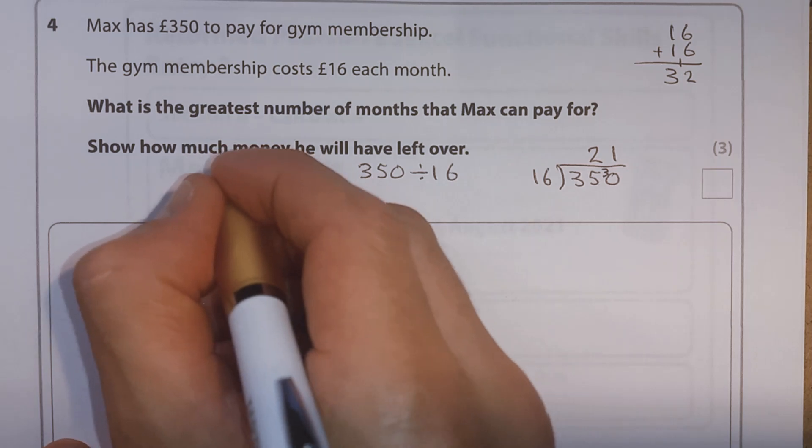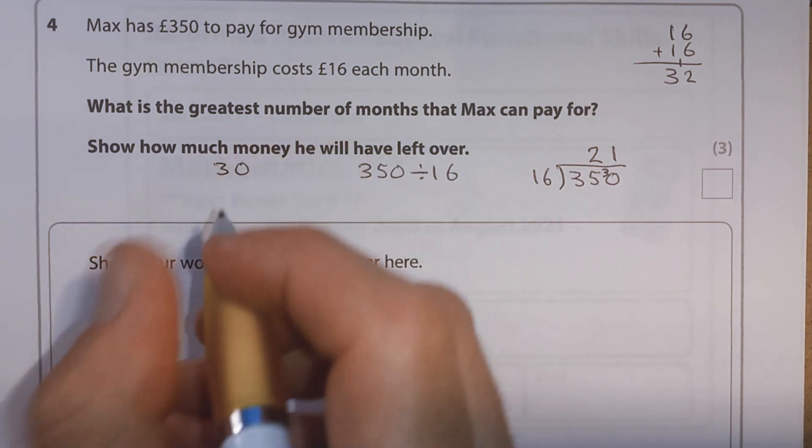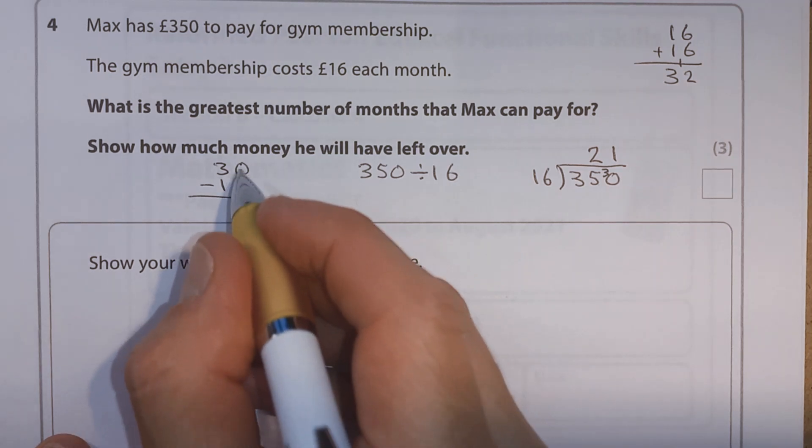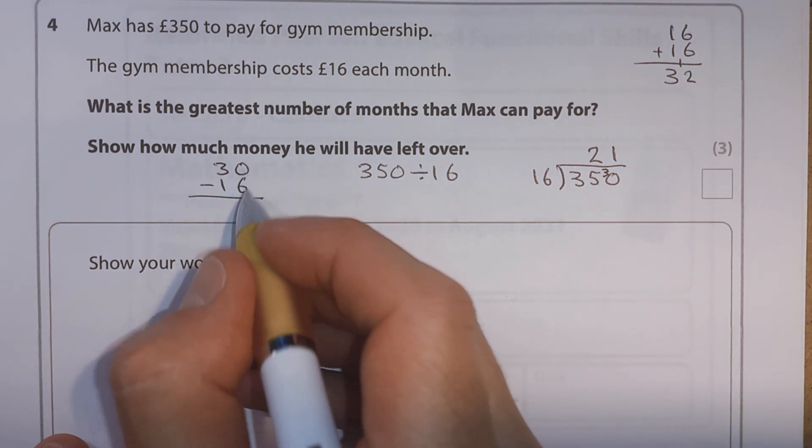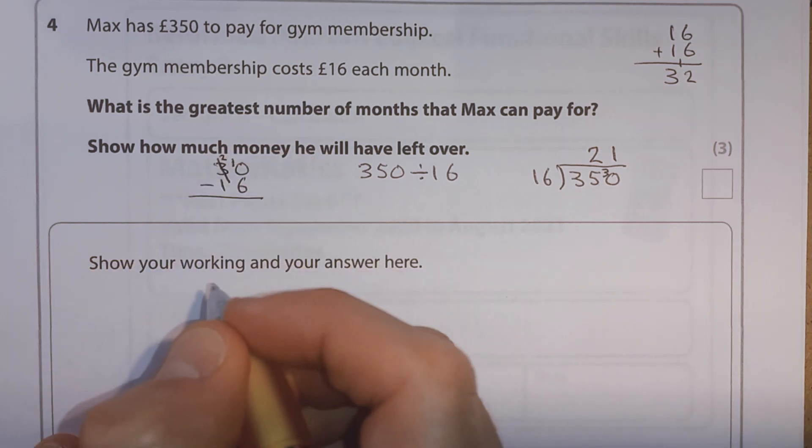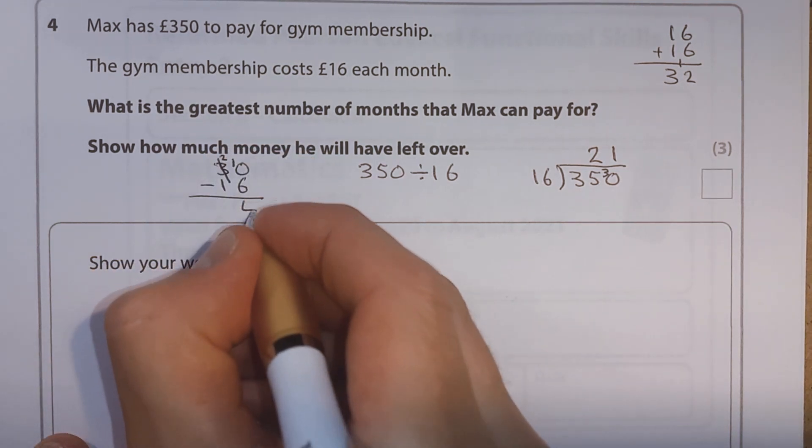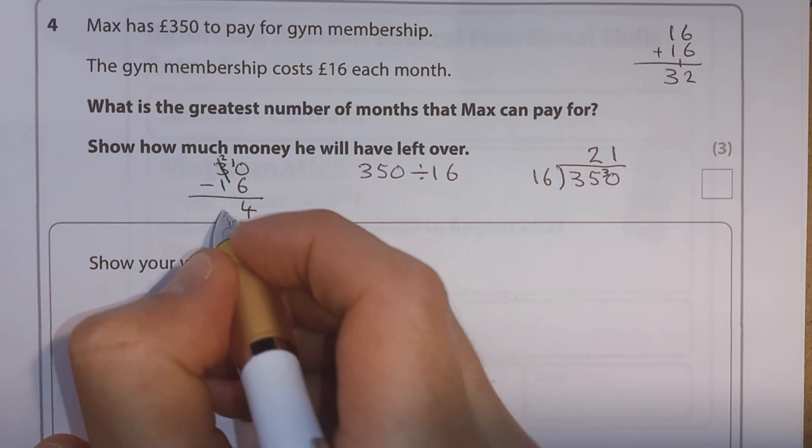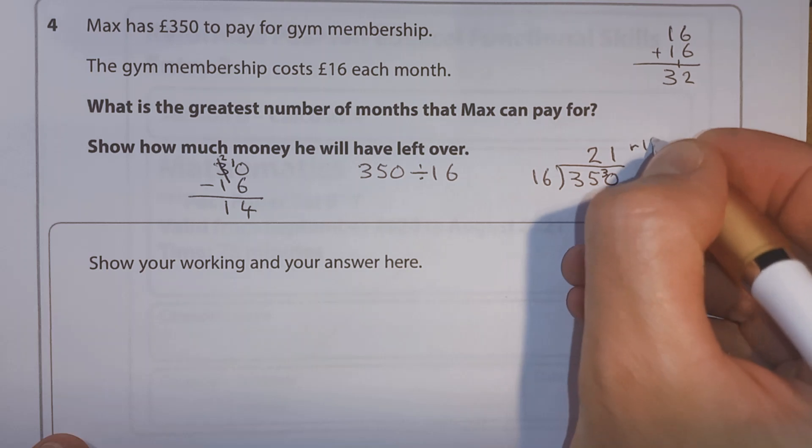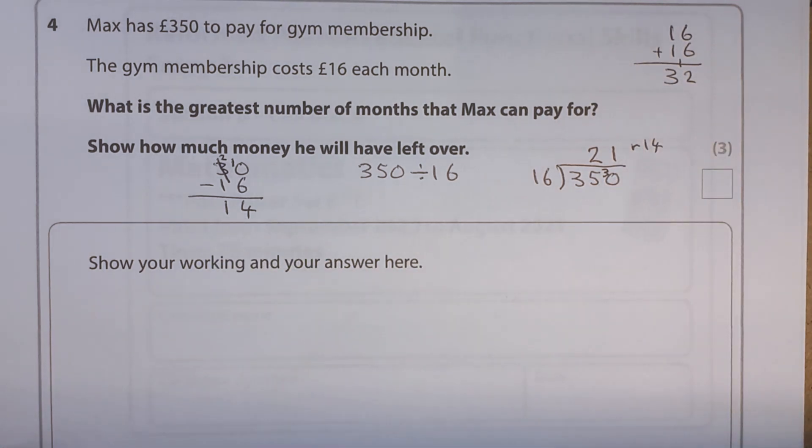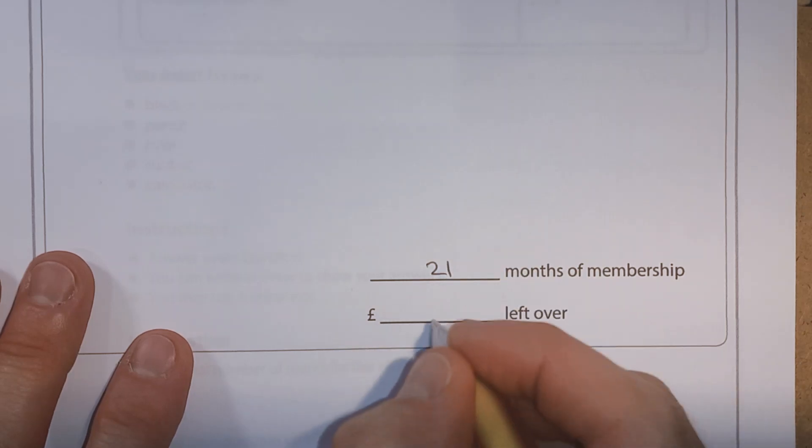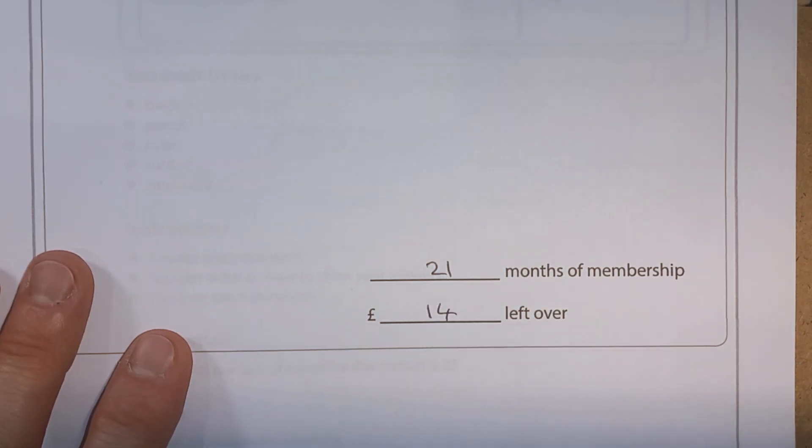And how much left over? Well, what we can do, we can do it over here. We can say, well, 30, let's take off one lot of 16. Well, zero minus 6, we can't do because 6 is bigger than zero. So we'll reduce this to a 2 and pass one over. So 10 minus 6, we get 4. 2 minus 1, we've got 1. So we've got a total of 21 remainder 14. So that means 21 months of membership with £14 left over.